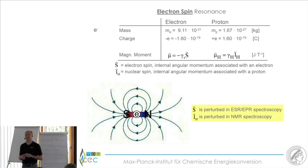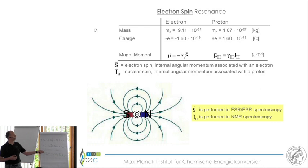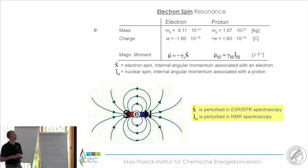Spin is of course a general property of most elementary particles, particularly of the electron. The electron is a spin one-half system and can be thought of as a little magnet with a north pole and a south pole. I want to give you two classical experiments that people have done in the past to detect spin and to visualize that something like spin must exist.